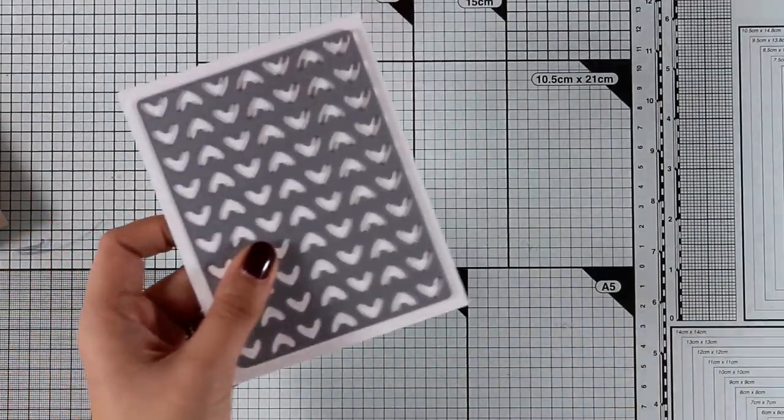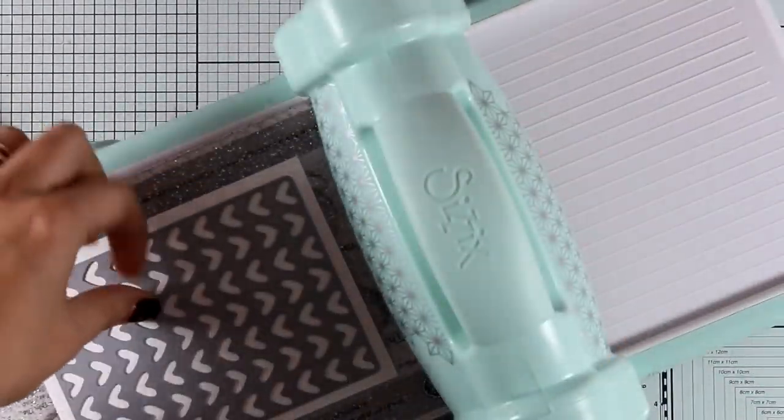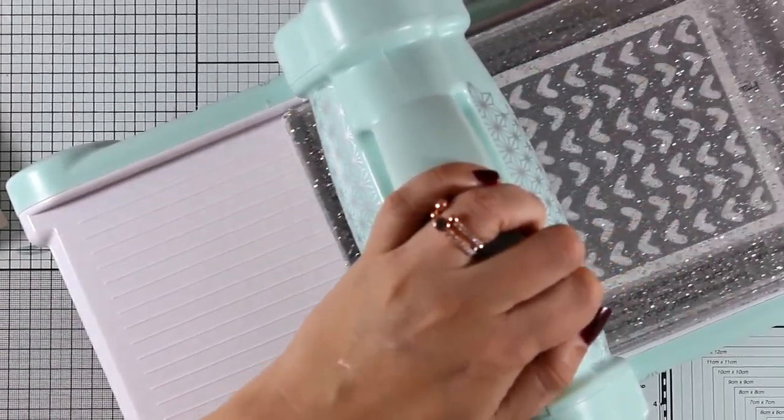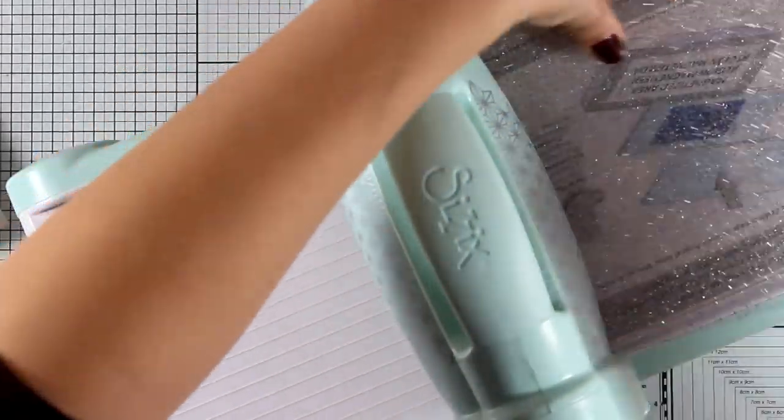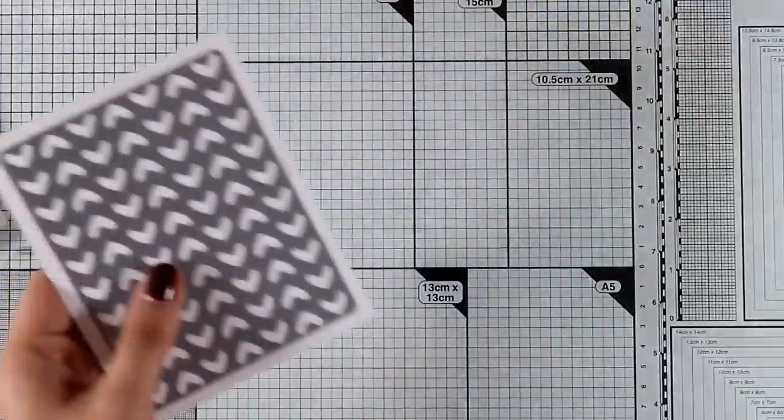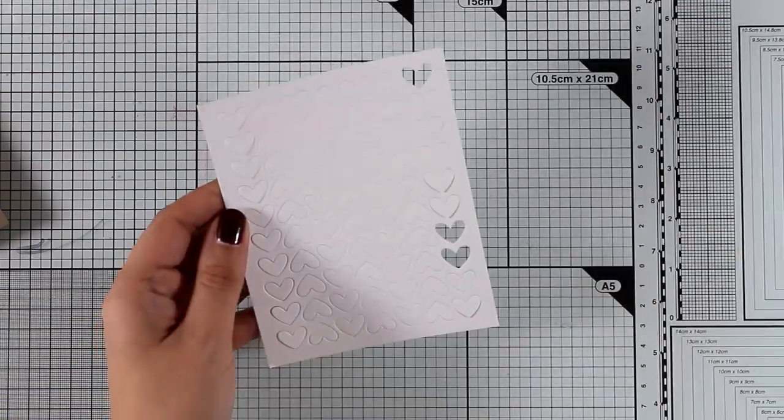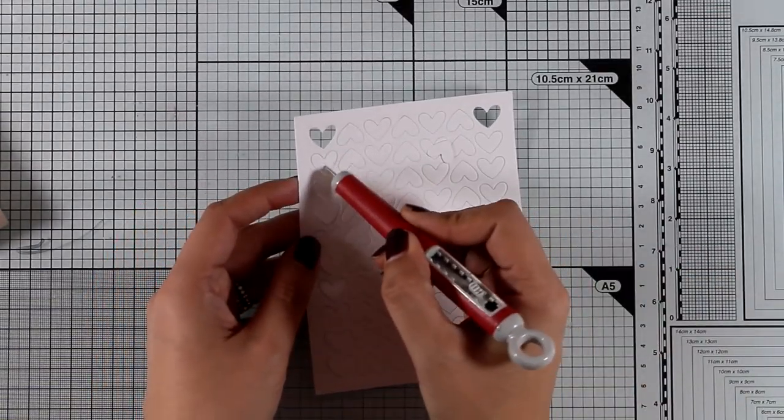Now this is the Full of Heart die that cuts out a bunch of hearts out of this panel. You can use the hearts if you like, put them on the side, you can use them as confetti inside shaker windows and everything. I'm going to use the negative space though which is going to be a panel for my card. So I'm just going to pop out all those hearts.